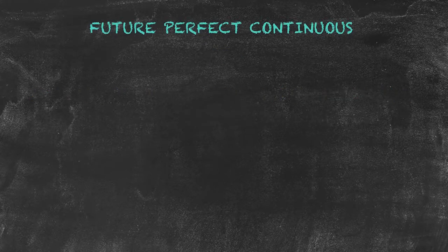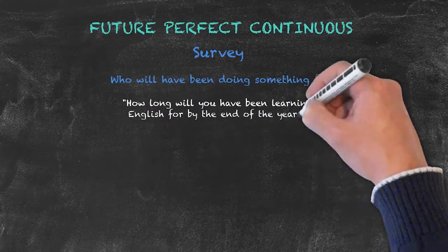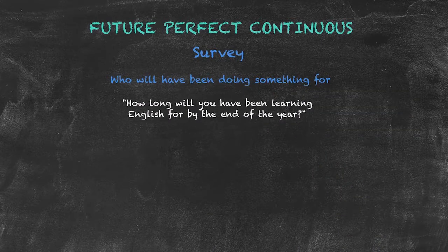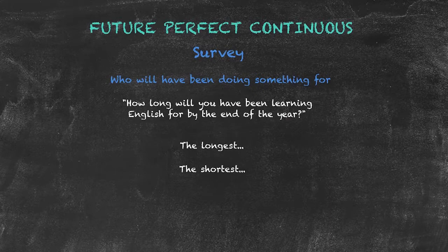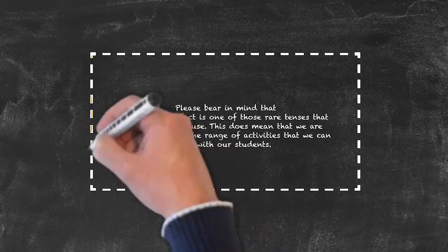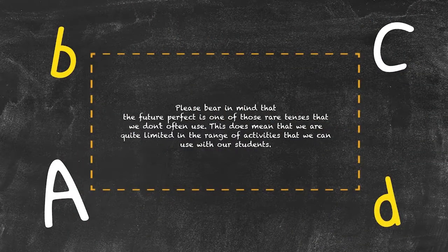A teaching idea for the future perfect continuous tense is a survey to find out the duration of an activity at a certain point in the future. A sample question might be: 'How long will you have been learning English by the end of the year?' At the end of the activity, students identify who will have been learning English for the longest and who for the shortest amount of time.